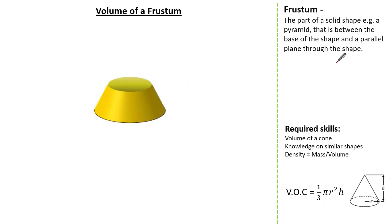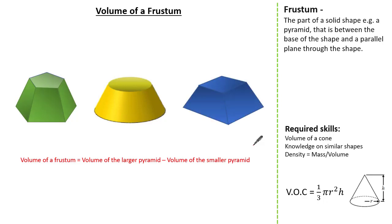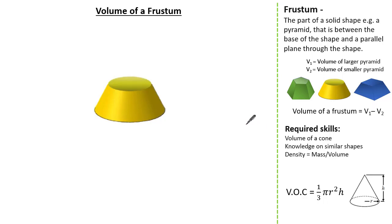Therefore the formula to work out the volume of a frustum makes logical sense. It is simply the volume of our larger pyramid subtract the volume of our smaller pyramid. This can be said for any type of frustum as they are made from pyramids. It is really important to note that our knowledge on similar shapes is paramount when calculating the volume of our pyramids.